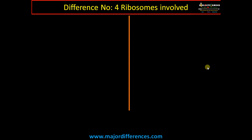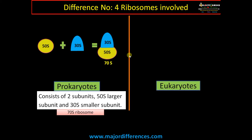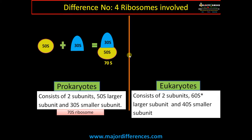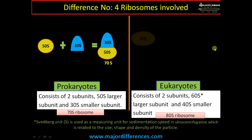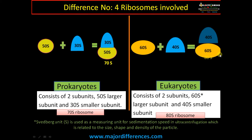Difference number four: the ribosomes involved. In prokaryotes, the 70S ribosome is involved, consisting of a 50S larger subunit and a 30S smaller subunit. In eukaryotes, it is the 80S ribosome, consisting of a larger 60S subunit and a smaller 40S subunit.